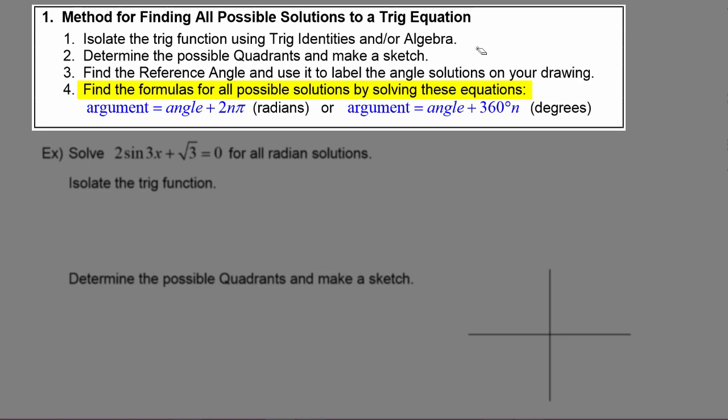We find the formulas by solving equations. If we are in radians, we take the argument of the trig function and set it equal to the angle plus 2nπ. Or if we are in degrees, we take the argument and set it equal to the angle plus 360 degrees times n.